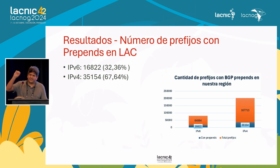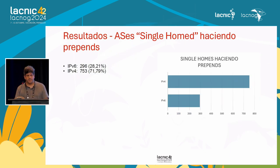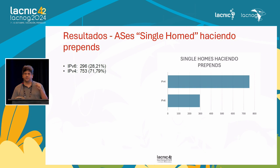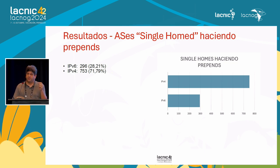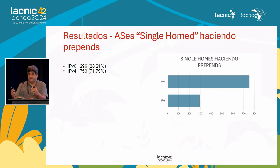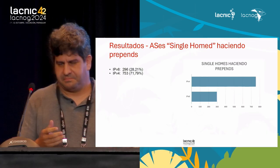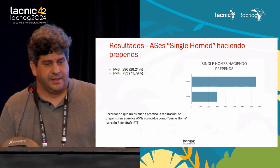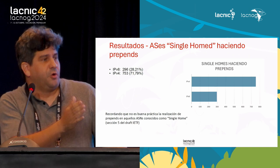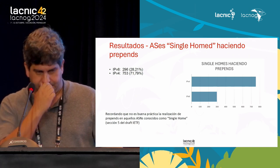Let's remember this corresponds to prefixes where at least one AS is from Latin America. Here we see single-homed ASes — those with only one provider — doing prepends: 196 cases in IPv6 and 753 cases in IPv4. This really does not make much sense because traffic engineering won't achieve anything when single-homed, and it still consumes CPU, memory, and other resources. Not doing prepends when single-homed is one of the best practices mentioned in the draft.